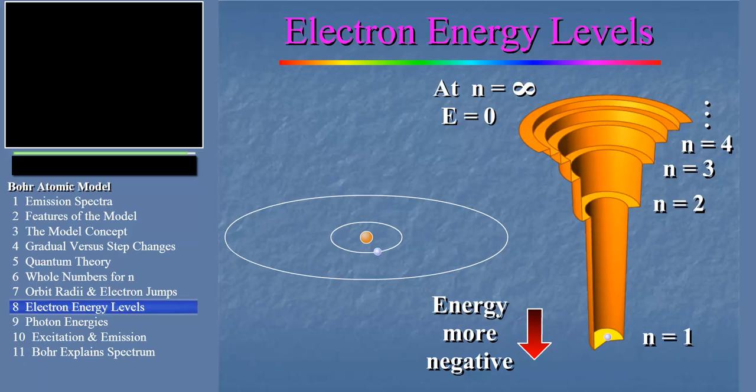The well predicts correctly the energies and wavelengths of photons absorbed and emitted by hydrogen as the electron jumps around.